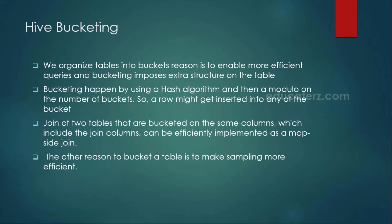Hive bucketing is mainly used to improve the performance of your queries. When you define buckets, internally it uses the hash algorithm, and based on that algorithm, all your values are distributed into those specific buckets. For example, if you specify 10 buckets at the time of creating the table using the CLUSTER BY clause, the number of buckets is always fixed. Even if a million records are available, all values always go into that specific fixed number of buckets.